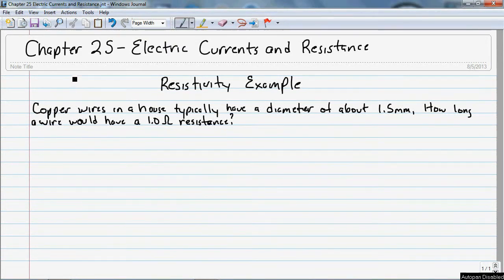How long a wire would have a 1 ohm resistance? So here we're given the resistivity of copper is equal to 1.68 times 10 to the minus eighth ohm meters.